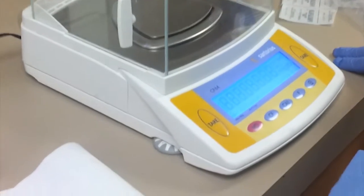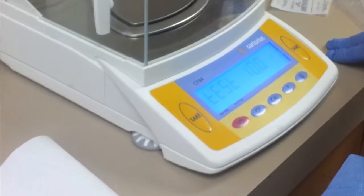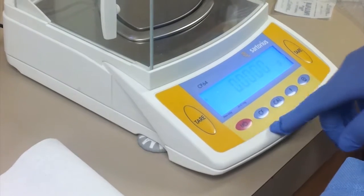The first thing we want to do is power on the balance. As you can see, the scale should read zero grams.